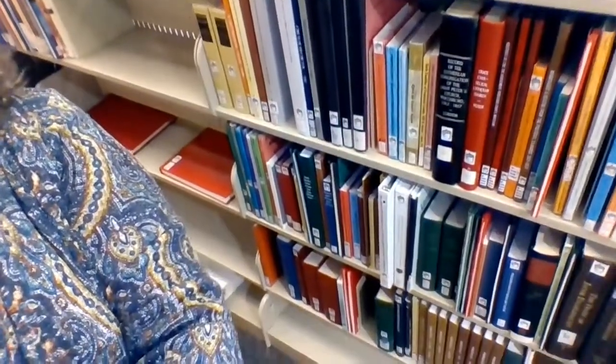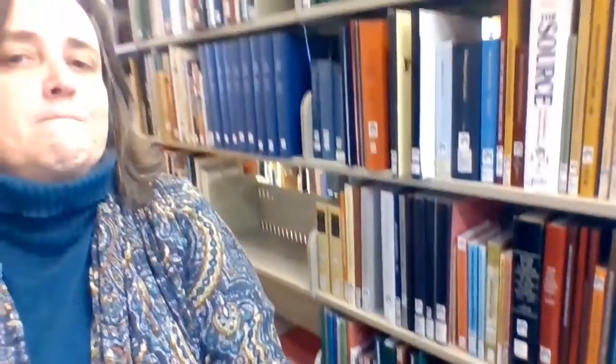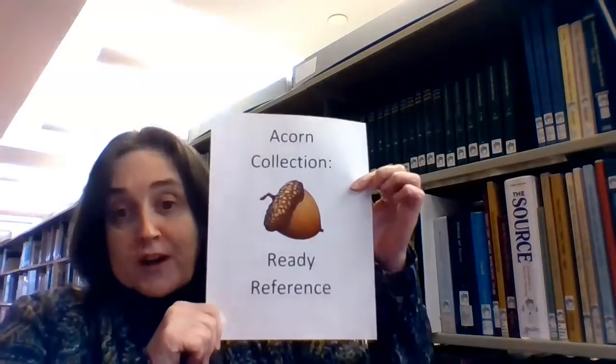We are here with our acorn collection. The acorn collection, which is our ready reference collection, consists of six different shelves here in the Maryland Room. It's about 80 odd books, and it is what we call our acorn collection, our ready reference collection.